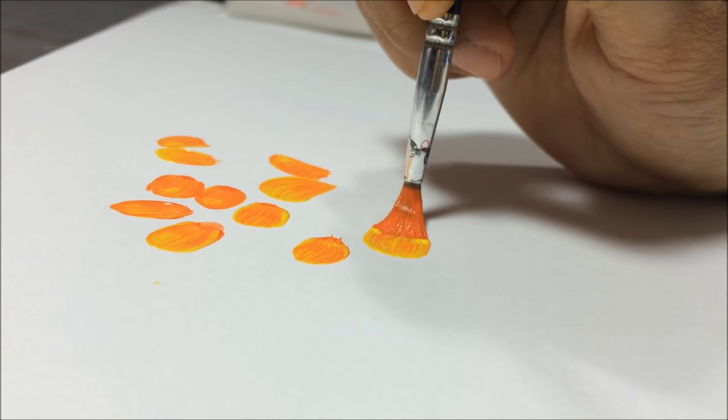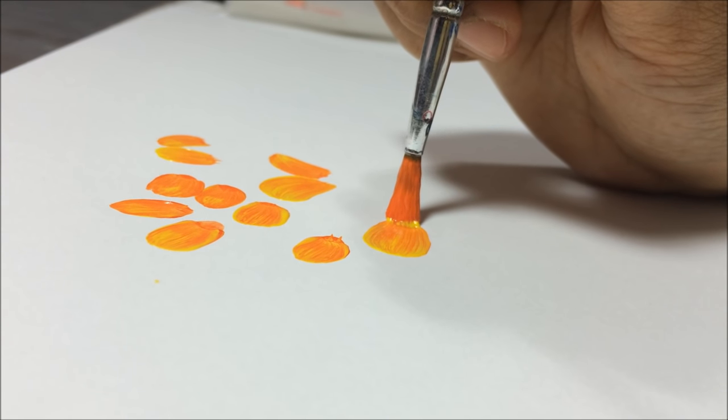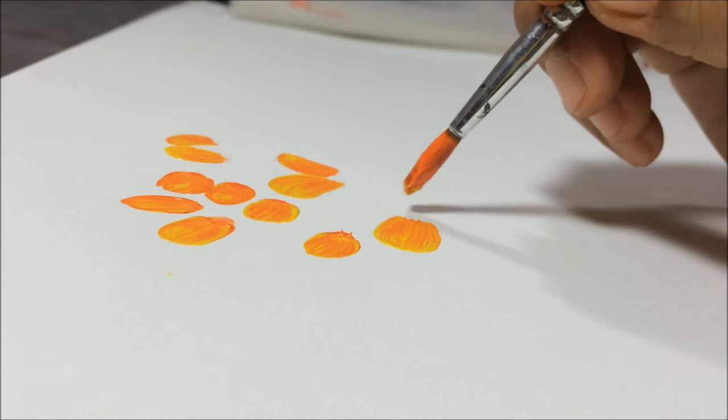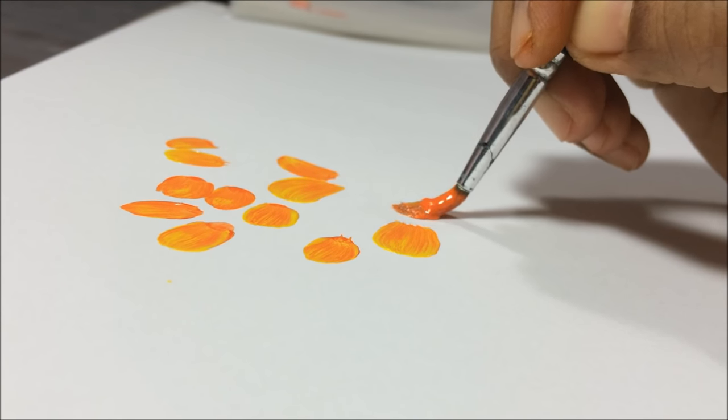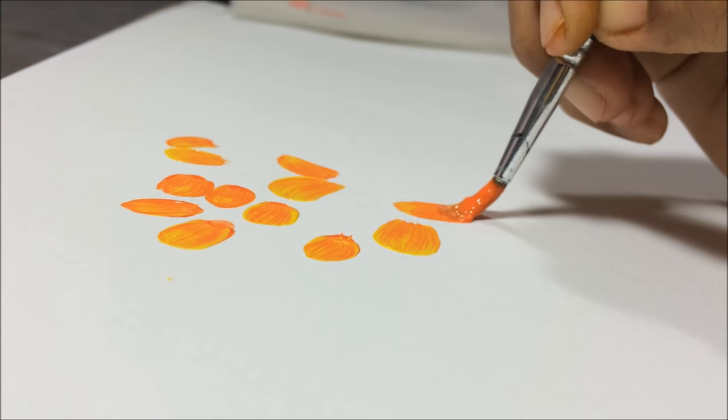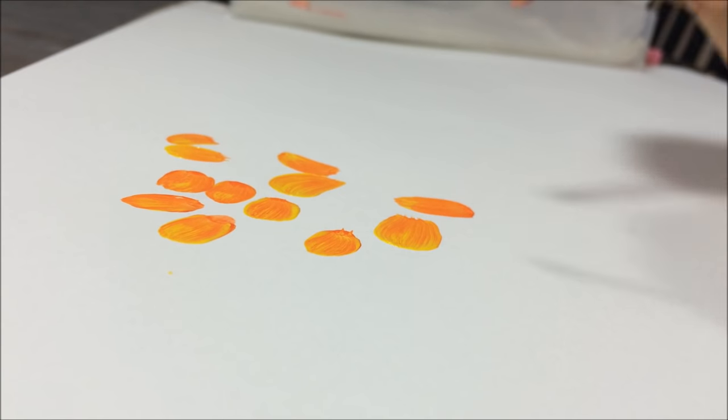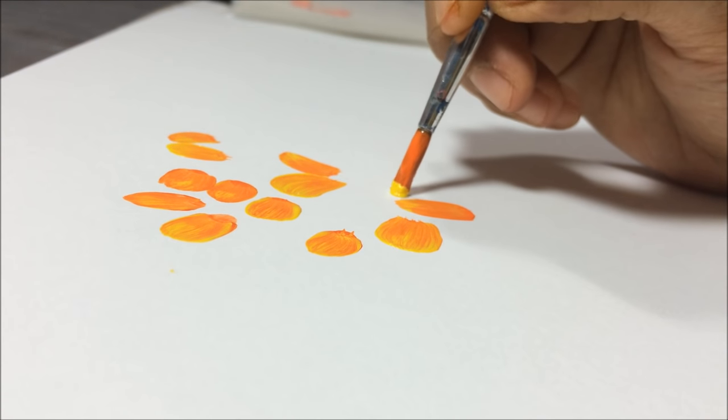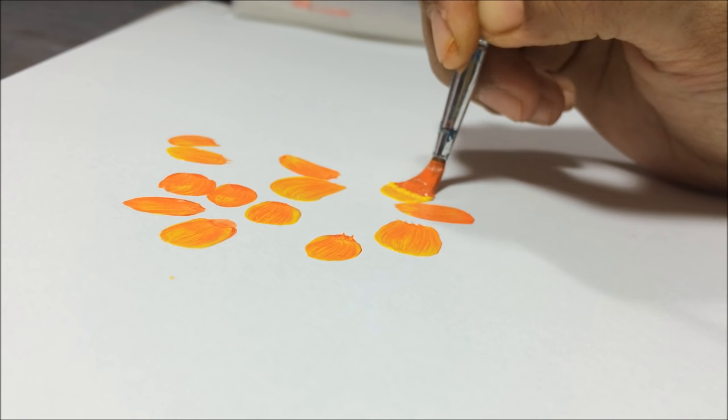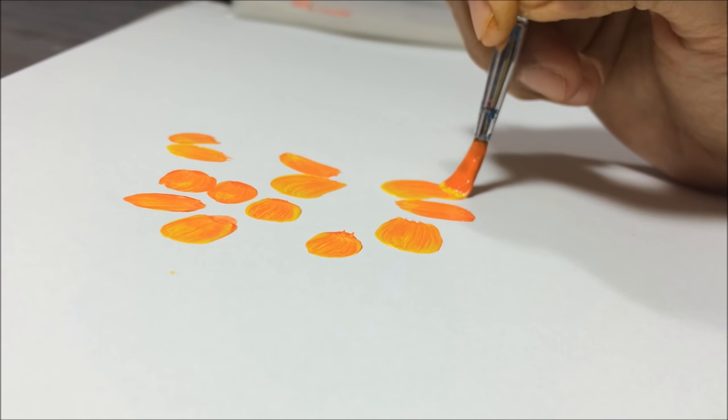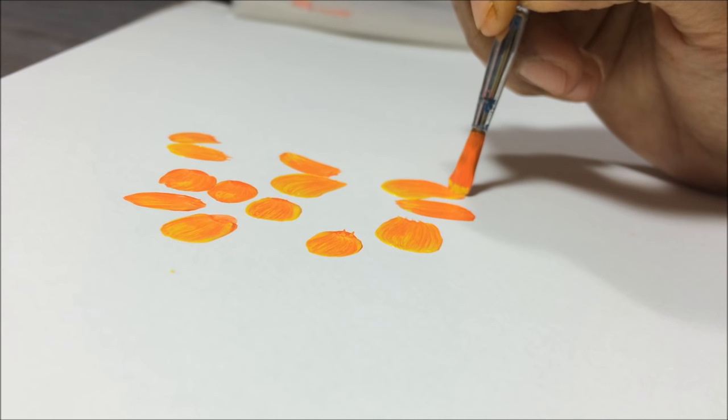For the second stroke, curve pressure stroke, keep brush down same as straight pressure stroke. But instead of pulling brush straight, in this stroke pull brush in curve path. At the end of the stroke, stand the brush up on its tip and lift the brush off the surface like the first stroke.